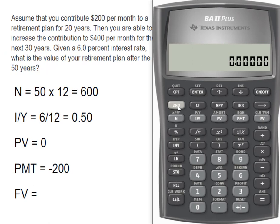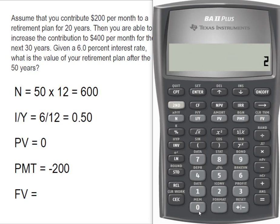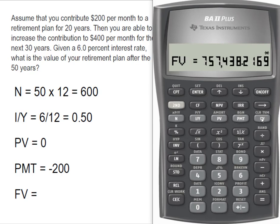We go to our time value of money keys — always make sure to clear them. We enter N of 600, our interest rate based on monthly is 0.5, present value is 0, and we enter that payment of negative $200. Now we compute future value, and we get $757,438.22.